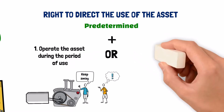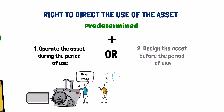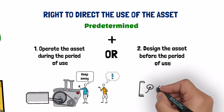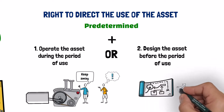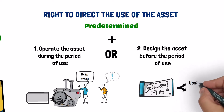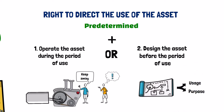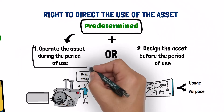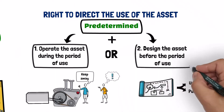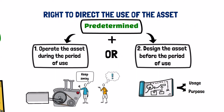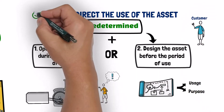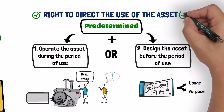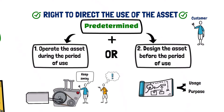Or, the customer designed the asset in a way that predetermines how it will be used and for what purpose it will be used. So, if the decisions are predetermined and one of these two conditions is satisfied, then the customer still has the right to direct the use of the asset during the period of use.